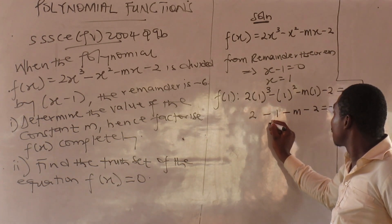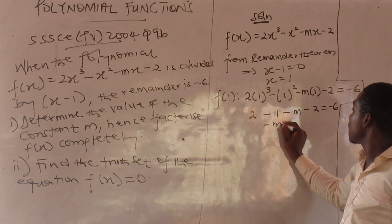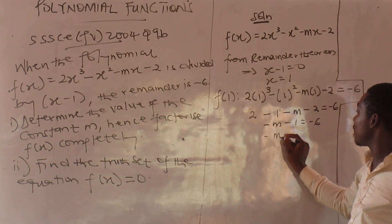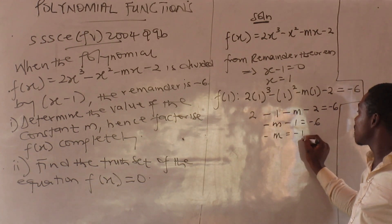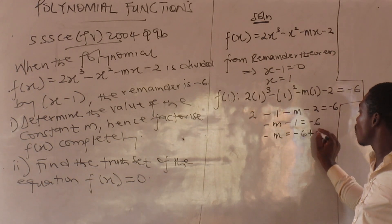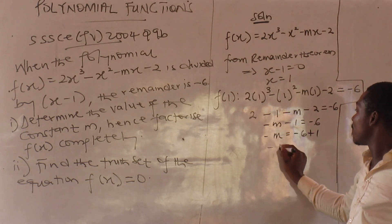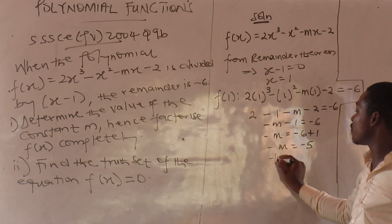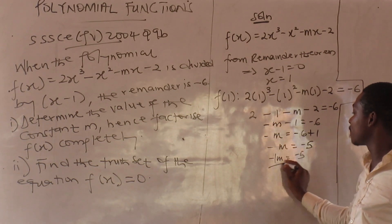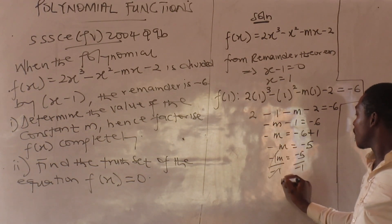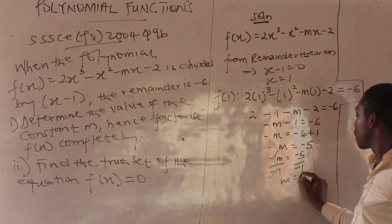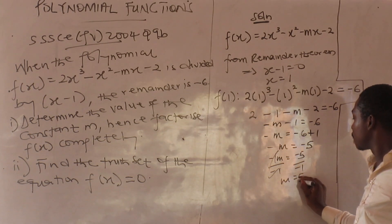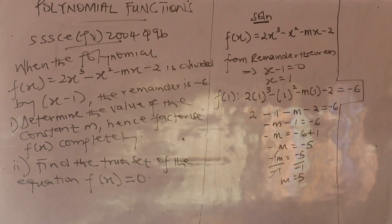So we have 1 minus m equals minus 6. That means minus m equals minus 6 plus 1, so minus m equals minus 5. Dividing by minus 1, m equals 5. That is the value of m.